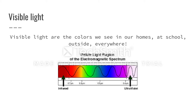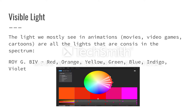Visible light are the colors we see in our homes, at school, outside, everywhere. How does that work in 3D animation? The light we see in animations, like movies, video games, cartoons, etc., are all the lights that consist in the spectrum.